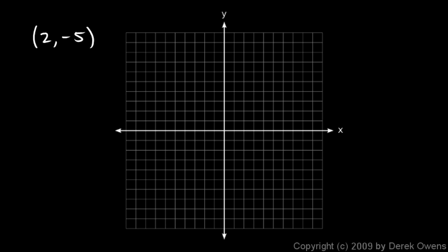And then we're told to plot the point 2, negative 5. So from the origin we go to the right 2 — you could count 1, 2. And from the origin we go down 5. The y value is negative, and negative y is that way, so we go in that direction 5: 1, 2, 3, 4, 5. And that corresponds to this point right here. This is the point 2, negative 5.